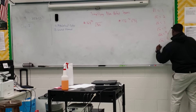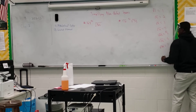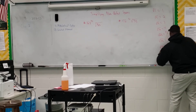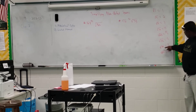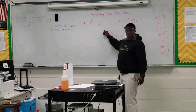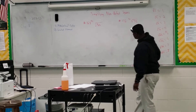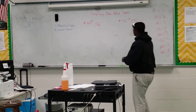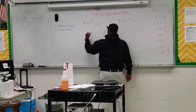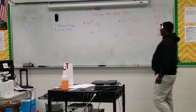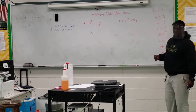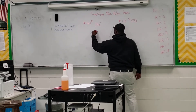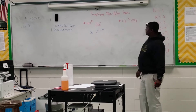Seven times seven is 49, so the square root of 49 is seven. We go from 49 to 64 — we don't have a square root of 50. So that's a non-perfect square, correct? So now, how do we simplify a non-perfect square? 50 has factors, and of those factors we can find ones that are perfect squares.